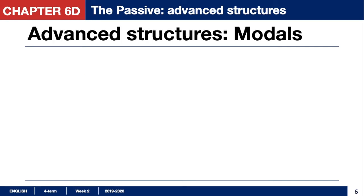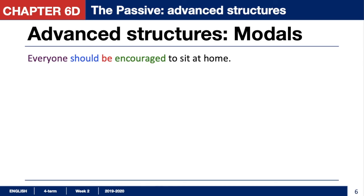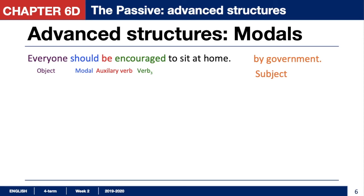Now let's move on and look at the advanced structures of passive. First, we start with modals. Our first example is: 'Everyone should be encouraged to stay at home during the epidemic.' Here, 'everyone' is the object, 'should' is the modal verb, and 'be' is the auxiliary plus verb 3, 'encouraged.' So we have the passive structure: modal verb plus passive structure.